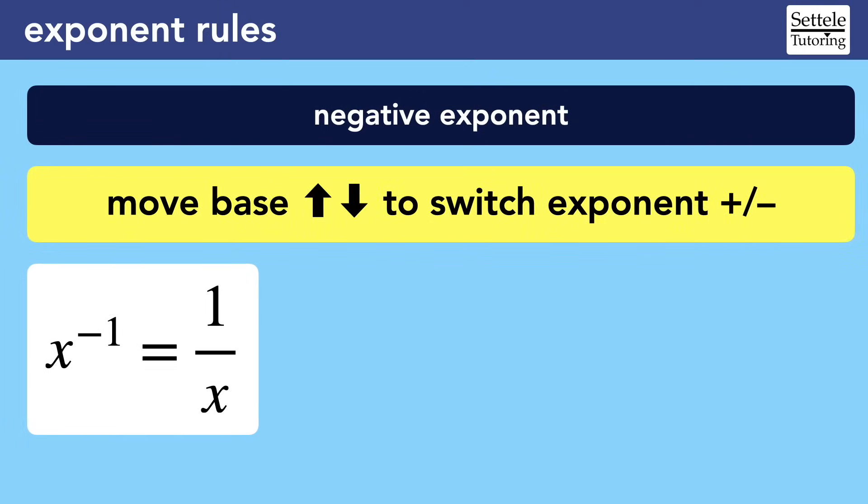Negative exponents are a lot harder to understand. My advice is to memorize the rule without worrying about why it works. In general, you can move the base up or down in a fraction to switch the exponent between positive and negative. Most people learn this rule by using x to the negative 1, which is equivalent to 1 over x. But this is hard to understand because both the starting fraction and the final exponent are invisible.